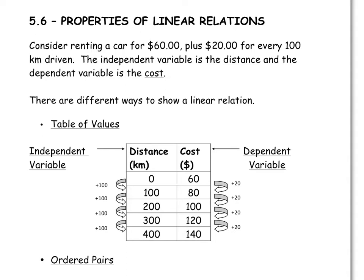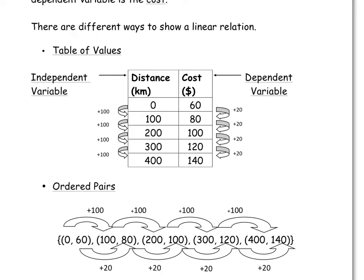There are different ways to show a linear relation. Table of values is one of them. Let's make a table of values between the independent variable of the distance to the dependent variable of the cost. At distance 0, it will cost you $60. Once you've traveled 100 kilometers, it'll cost you $80, 200 kilometers, $100. Notice that you're going up by $20 every time as you go up by 100 of the distance.